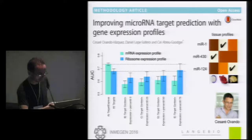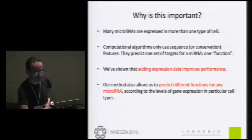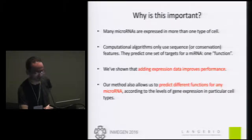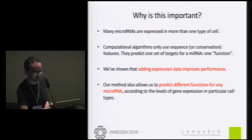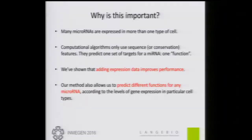The improvement our method gives is beyond just the simple idea of taking your favorite target prediction method, selecting predicted targets, and intersecting with genes expressed in that cell line—something people generally do that already improves predictions. Our method, which uses the expression level of all genes, is even better. There are many microRNAs expressed in more than one type of cell, so using one computational algorithm gives only one target list, which may not capture the potentially different functions the microRNA performs in different cell types. By adding gene expression data from different conditions, you can think about which functions change between different cell types for that microRNA.